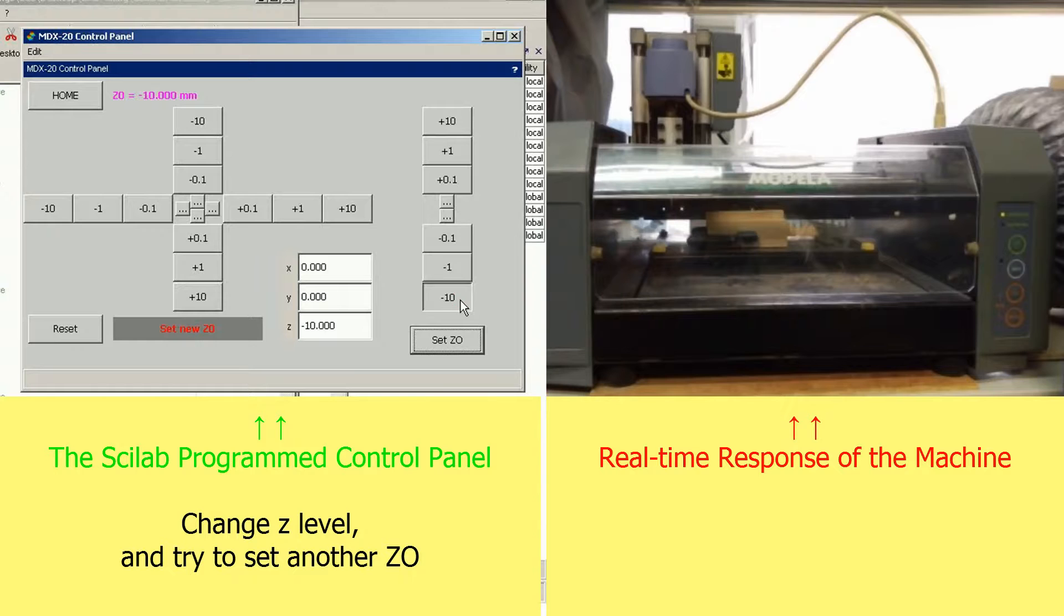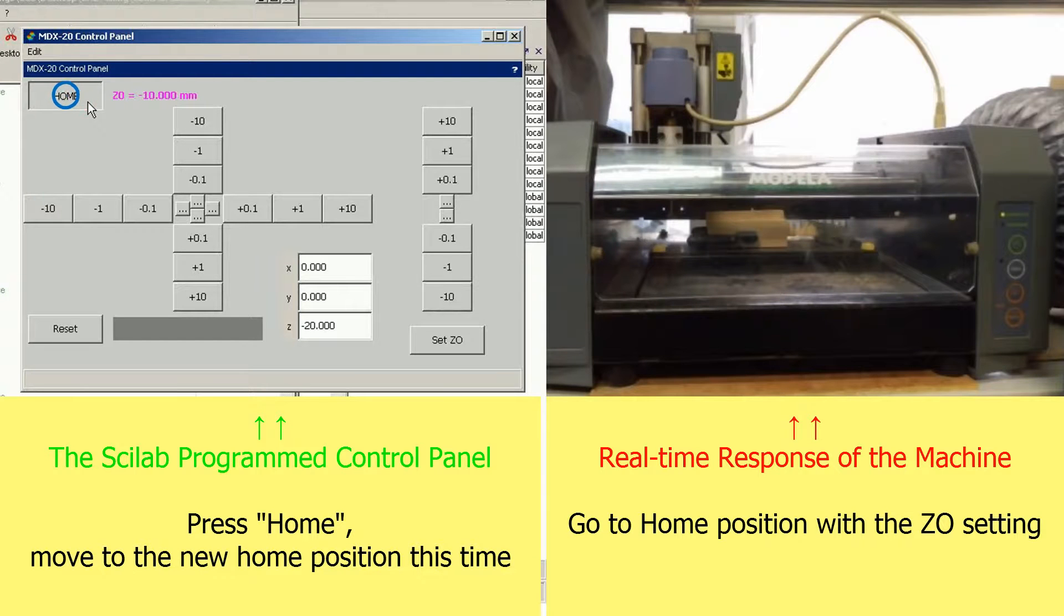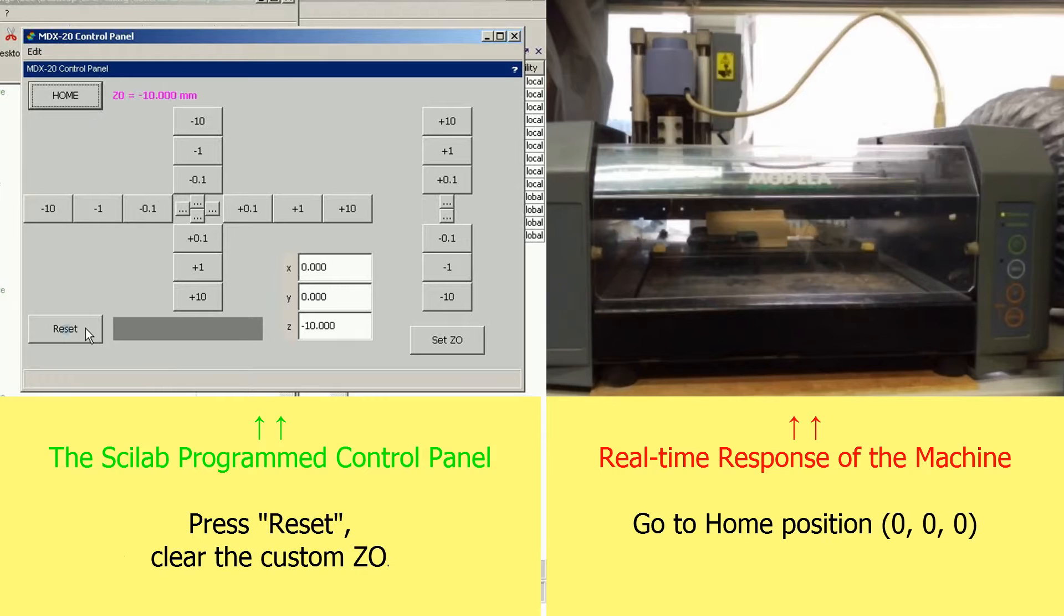With this method, you can resume the machining with the exact same set level. Even though you power off the machine or the machine accidentally powers off, you can recreate the custom set zero level by pressing the reset button.